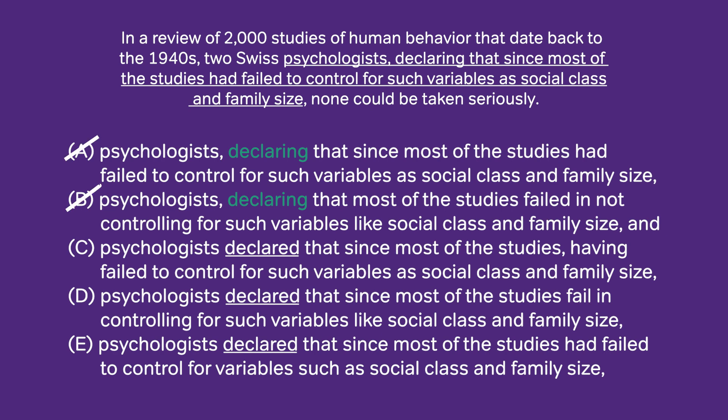A and B are out. Then in C, interestingly, we repeat the same mistake with the phrase 'most of the studies.' Most of the studies are not followed by a verb — they're also followed by a participle phrase, 'having failed.' We're repeating that same kind of mistake in another part of the sentence. That is something that often appears in sentence correction answer choices. Same mistake, different part of the sentence — answer C is out.